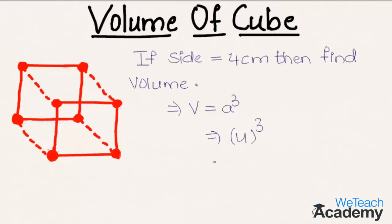That is nothing but 4 multiplied by itself for 3 times. By multiplying we get 4 into 4, that is 16, 16 into 4 is 64 centimeters cube as the volume. Remember, volume is always measured in cubic units.